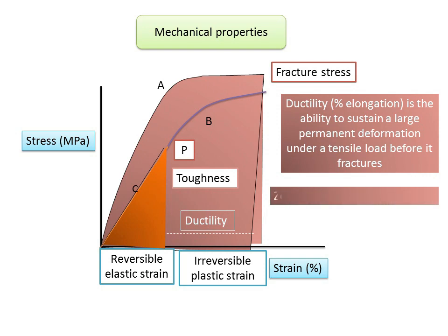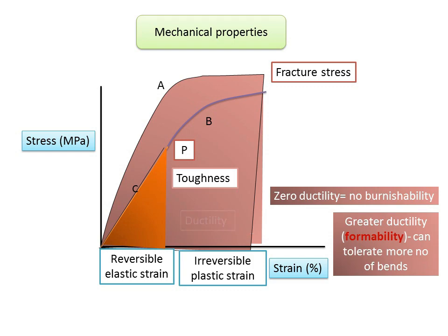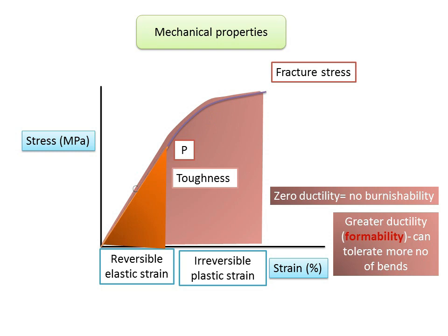If a material exhibits zero ductility — where the proportional limit corresponds to fracture stress — it cannot be burnished. Regarding orthodontic arch wires, they should exhibit high ductility, or formability, so that multiple bends can be formed into desired configurations such as coil loops without the wire fracturing. This is an important feature for good workability.